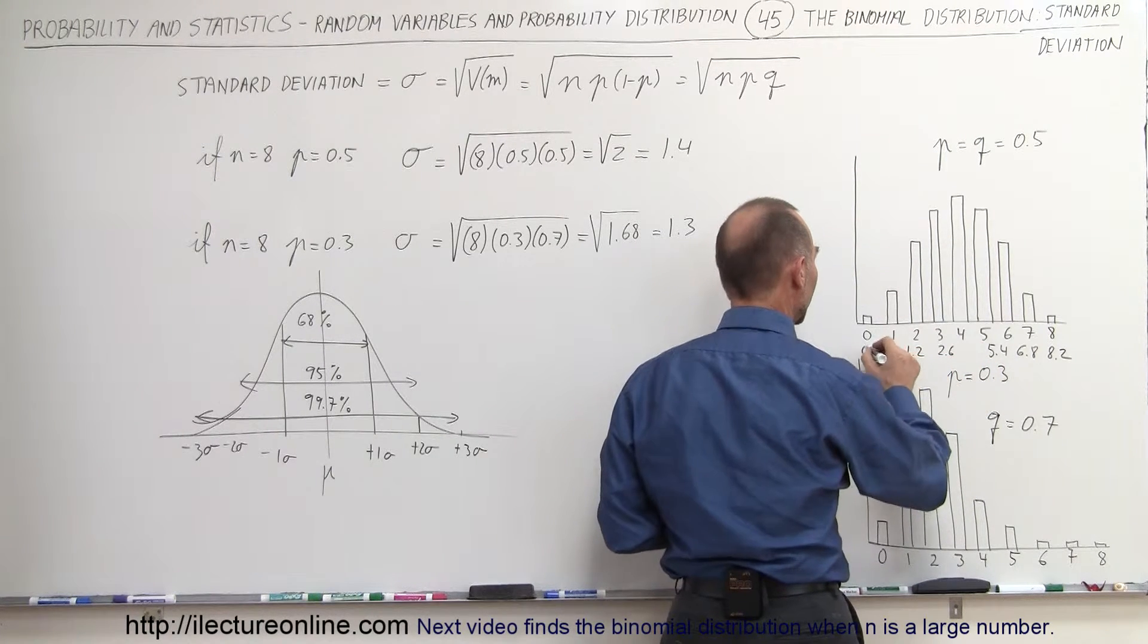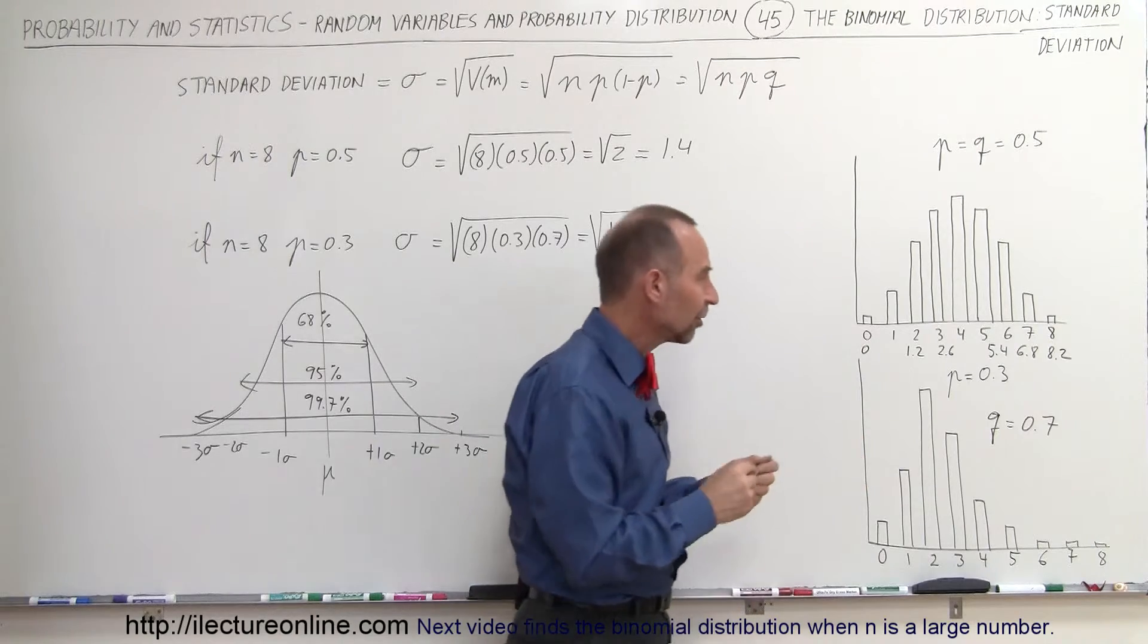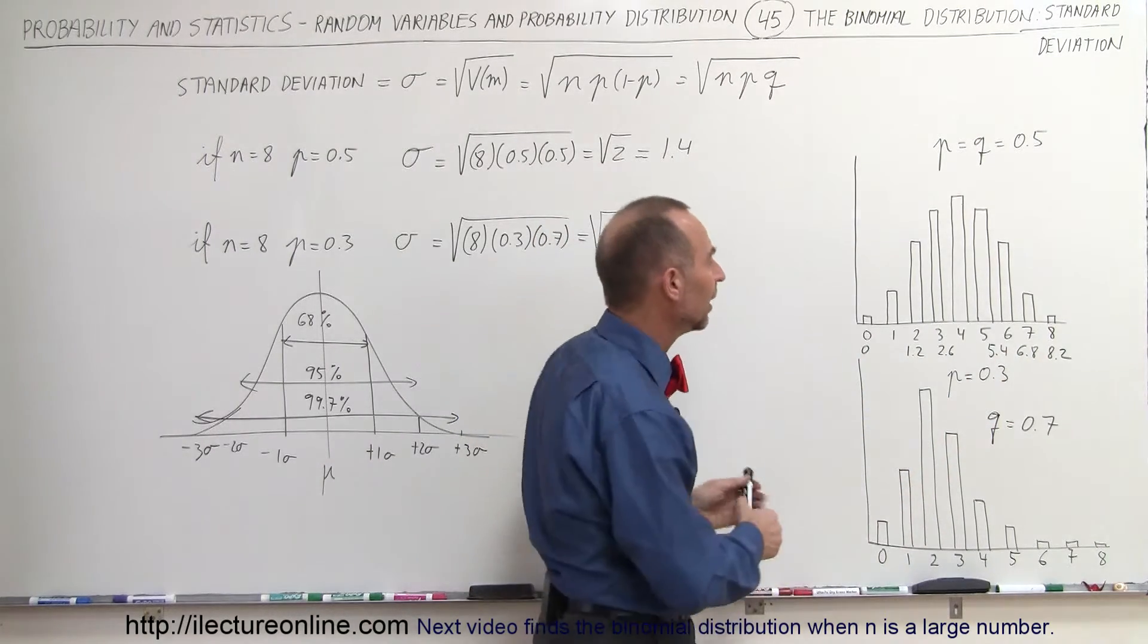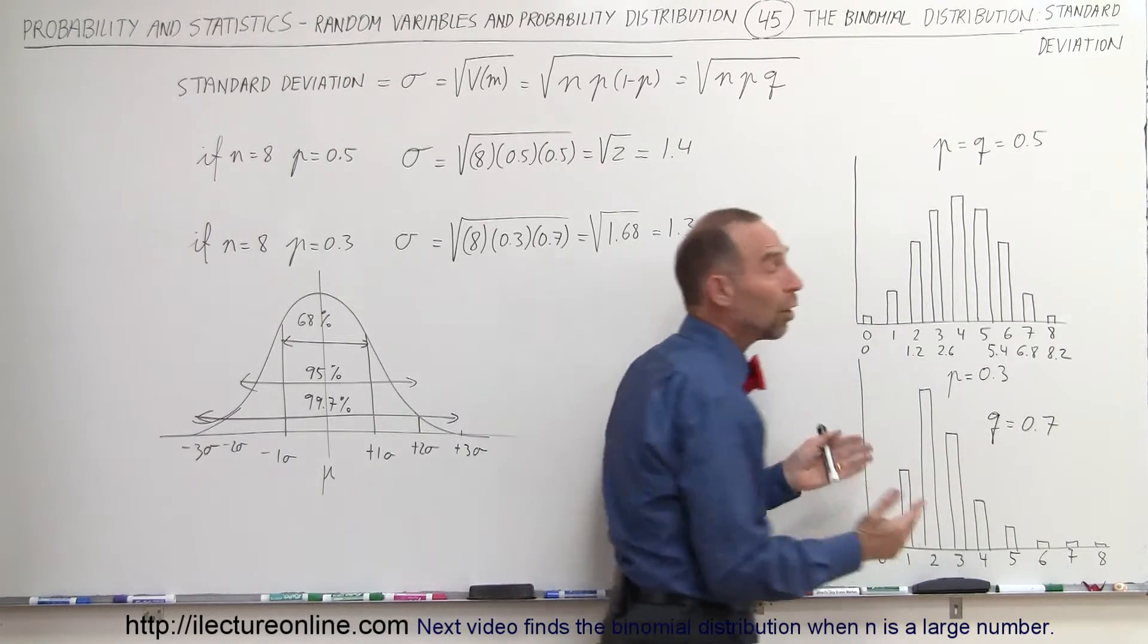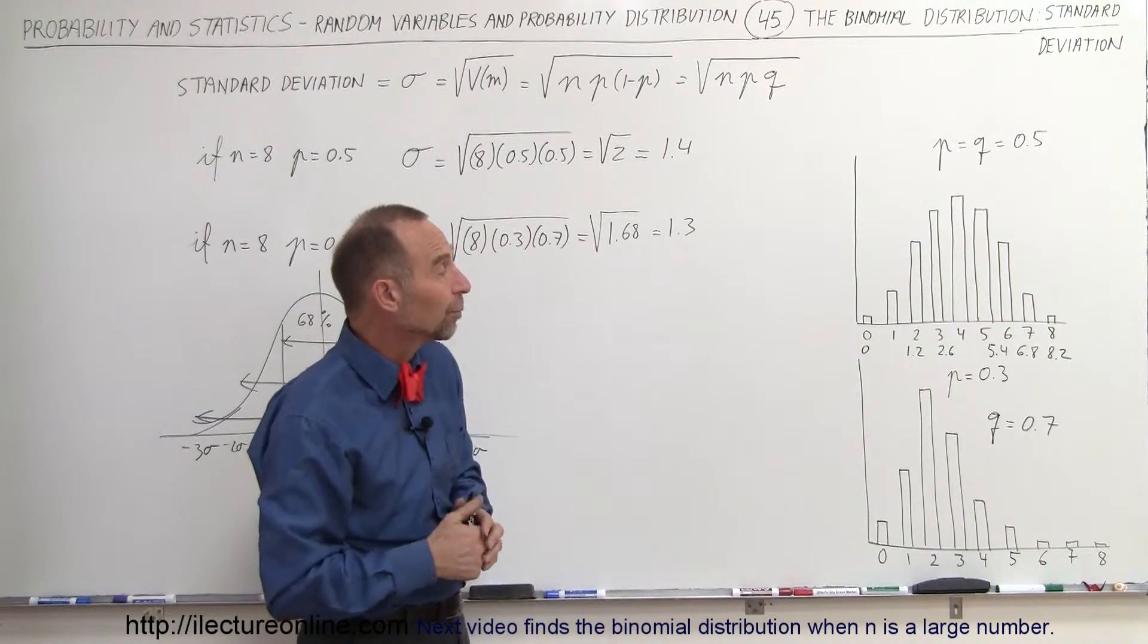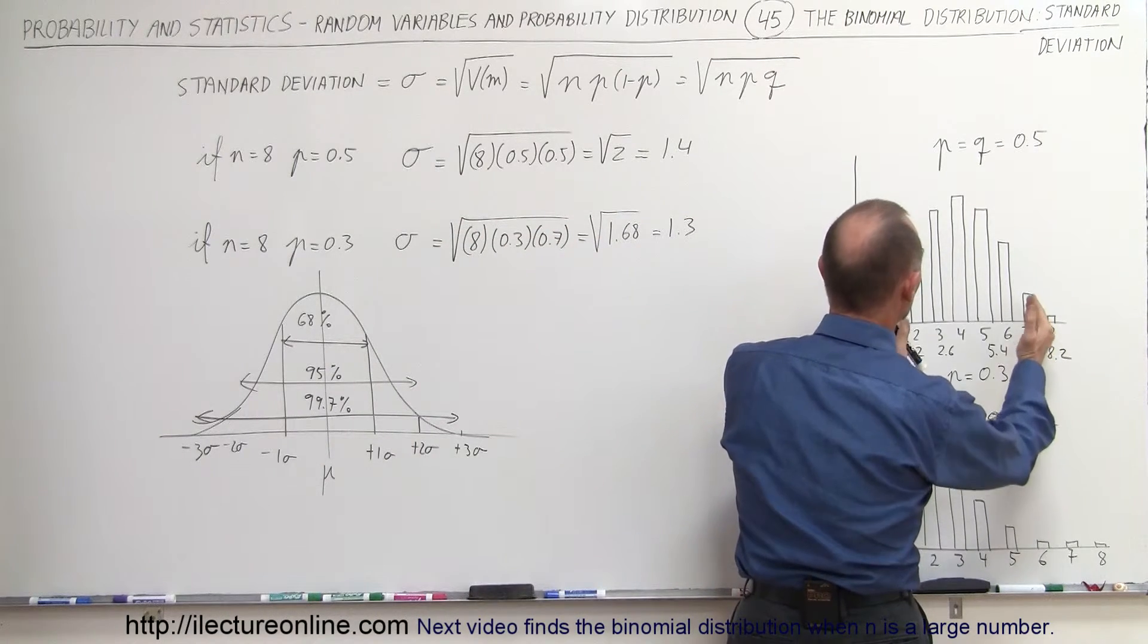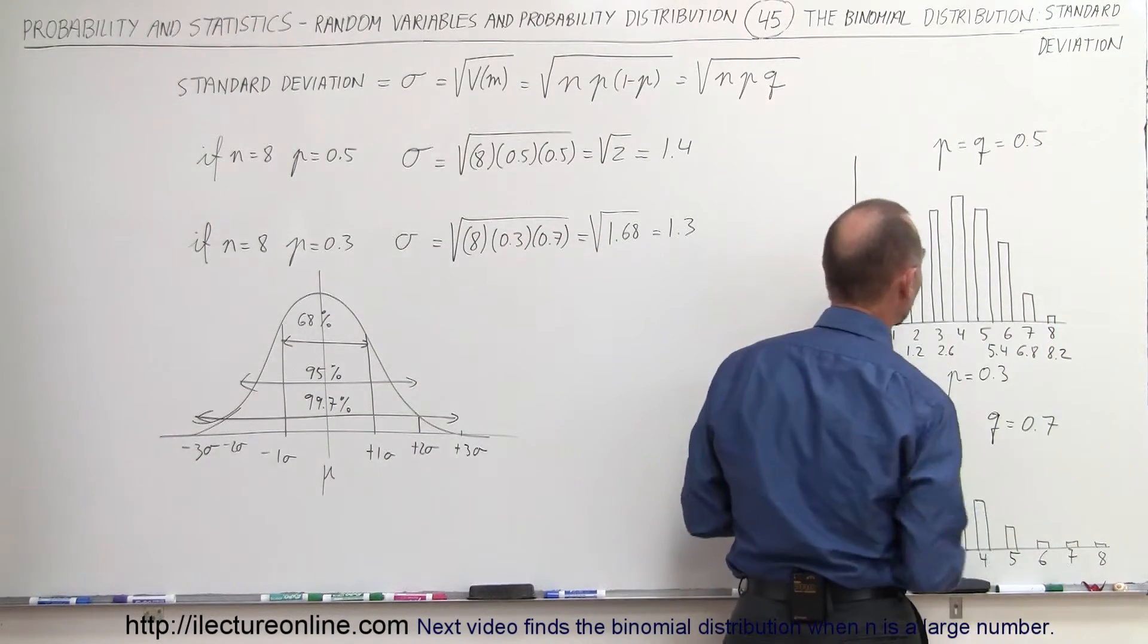So you can see that according to this it falls pretty close to the theoretical thing, that plus or minus 3 sigma incorporates just about all of the values, which in this case incorporates 100% of the values. Plus or minus 2 sigma incorporates the vast majority of the values, 95%.